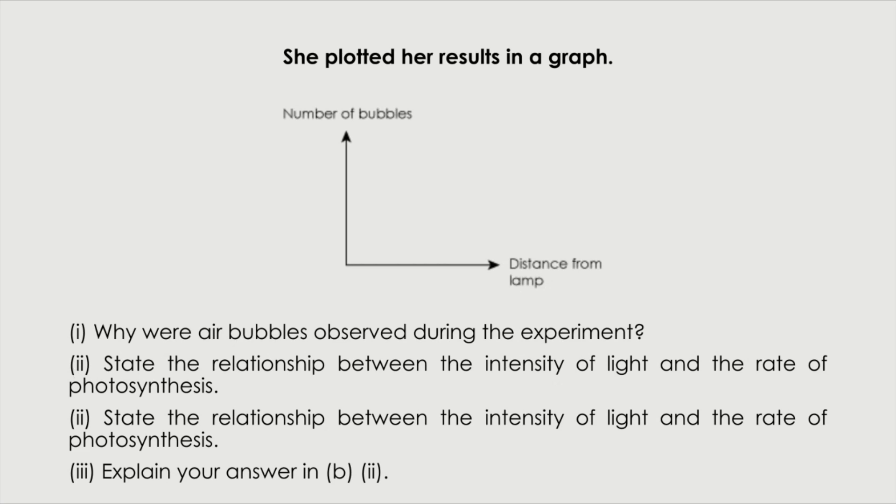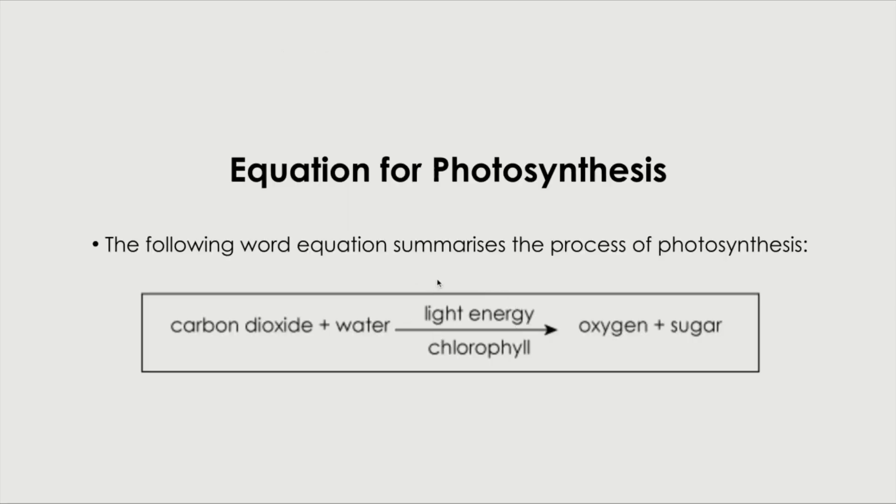State the relationship between the intensity of light and the rate of photosynthesis. As we spoke before, the higher the intensity of light, the higher the rate of photosynthesis. Now, part 3. Explain your answer in B part 2. We said the higher the intensity of light, the greater or the faster the rate of photosynthesis.